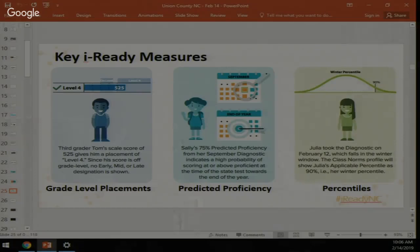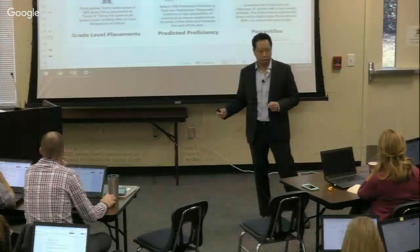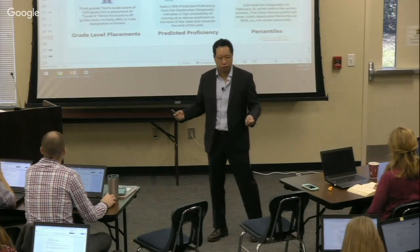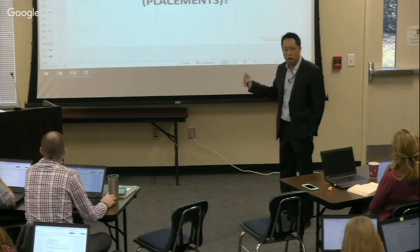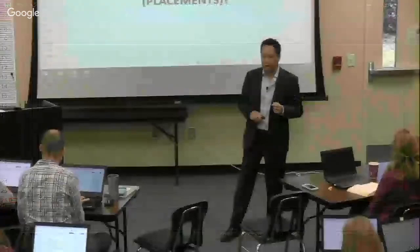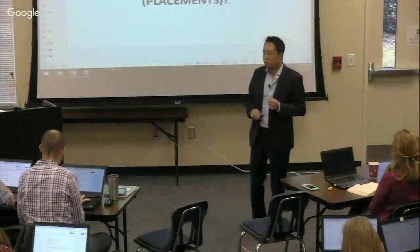We also run that scale score through a regression formula to tell you the student's probability of being proficient on the North Carolina EOG at the end of the year — we call that predictive proficiency. We also compare that score against other students across the country to tell you how the student is performing relative to their peers, which is the national percentile rank.